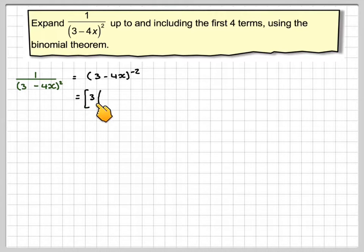We need to take out a 3 so we can make it (1-4x/3). If you multiply it back in, you get 3 and those 3's cancel out. But that 3 is still to the minus 2. Now 3^(-2) is 1/9.